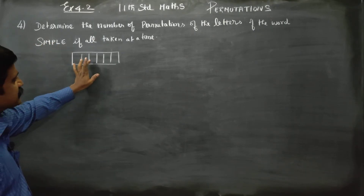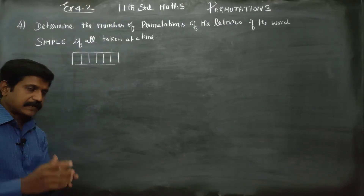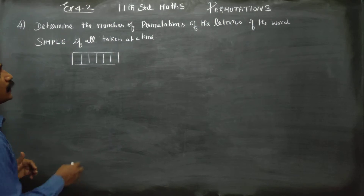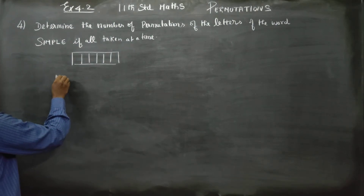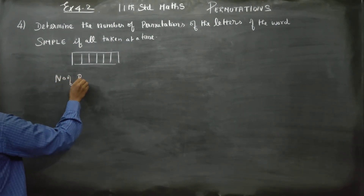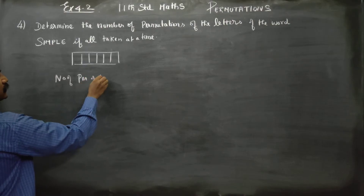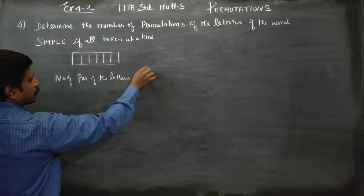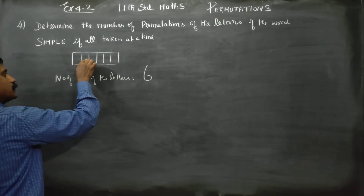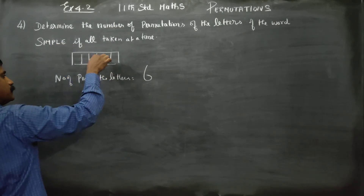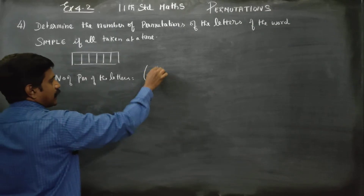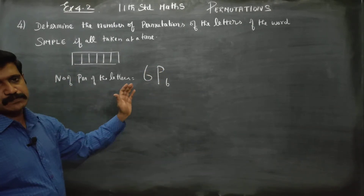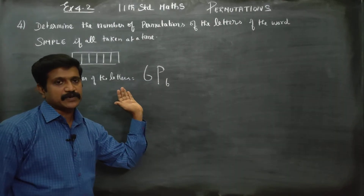How many spaces do we have? The number of available spaces is 6. How many letters are available? The number of available letters is also 6. So the number of permutations of the letters — the number of permutations — is equal to: since the number of places is 6.